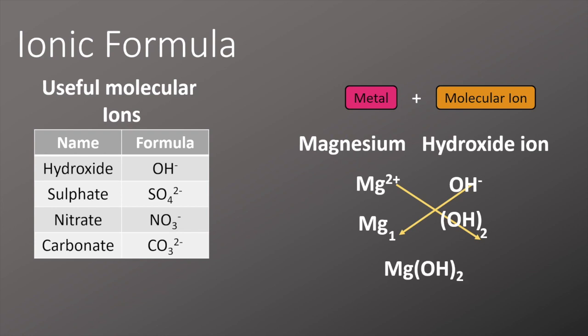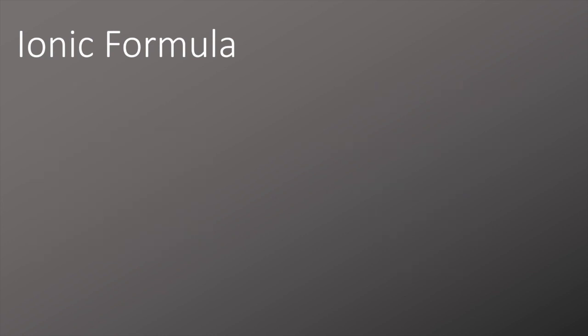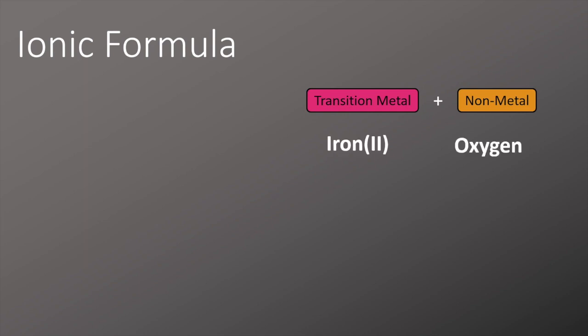In our final example here, we're going to look at a transition metal with a non-metal. Now transition metals are a little bit different as they can have different charges or variable oxidation states. So we're going to look at the example of iron(II) reacting with oxygen. In this case, iron(II) will have a 2+ charge and oxygen has its usual 2- charge.